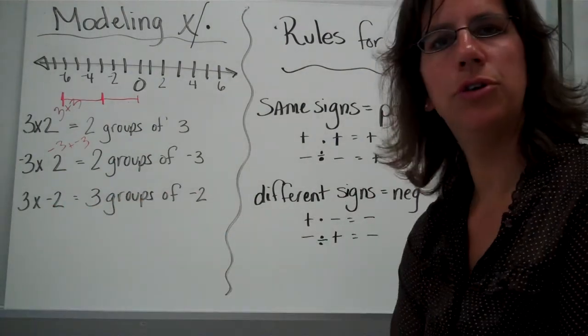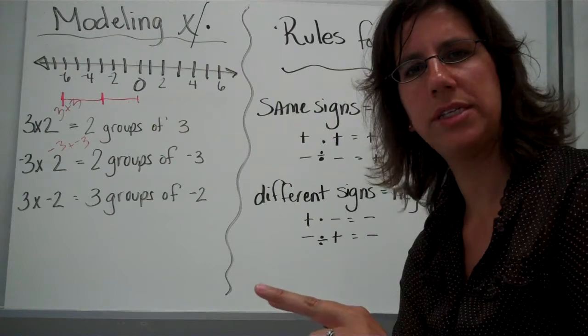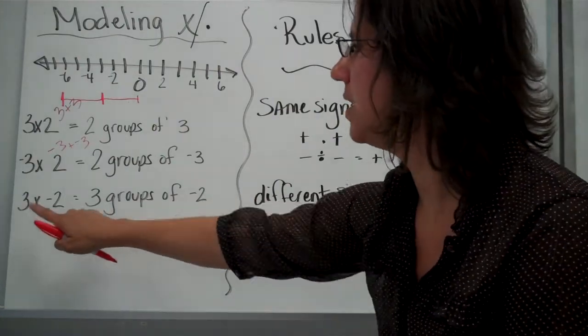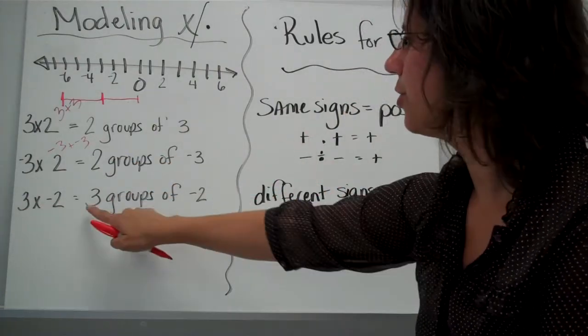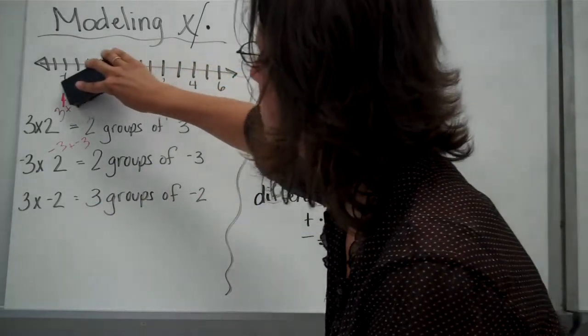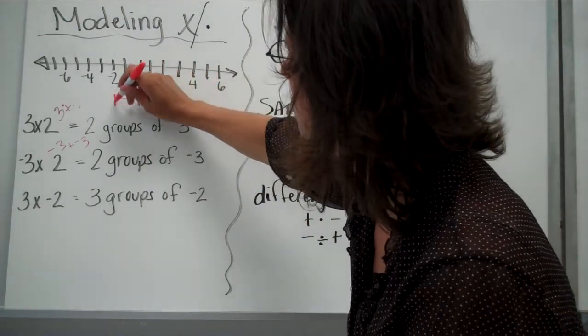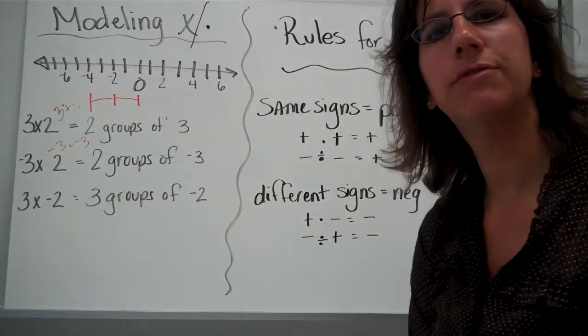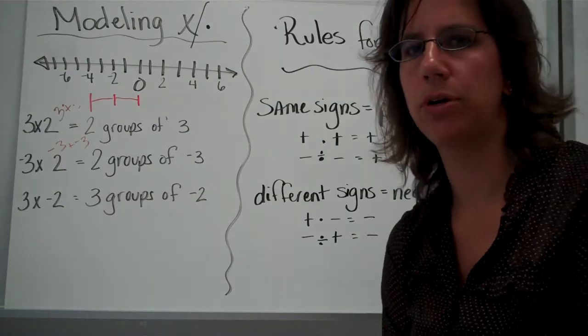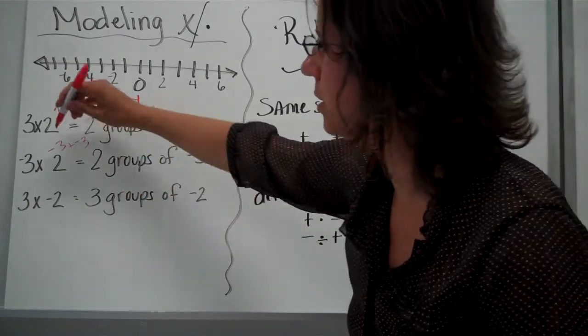And then finally, if you're looking at 2 numbers, 1 is positive and 1 is negative, I would read this as 3 groups of negative 2. If we start here, we go to negative 2, and then another negative 2. Now, I want you to remember, this is 2 groups of 3, this is 3 groups of 2.